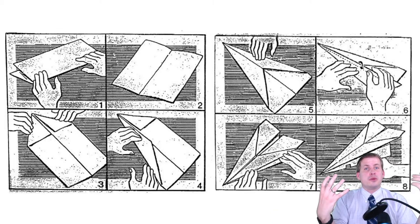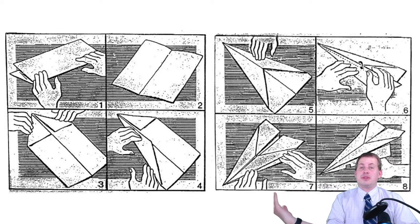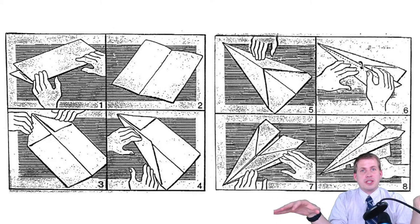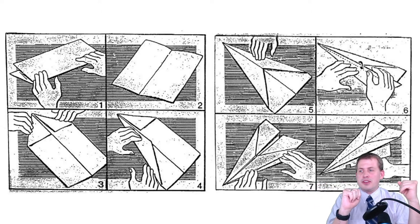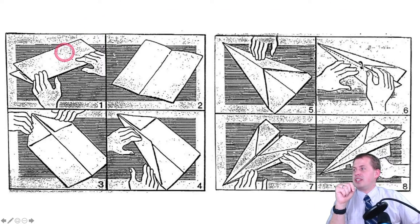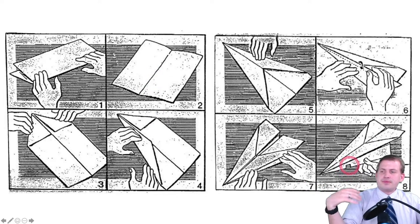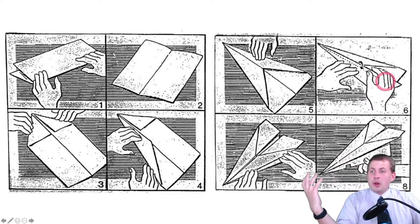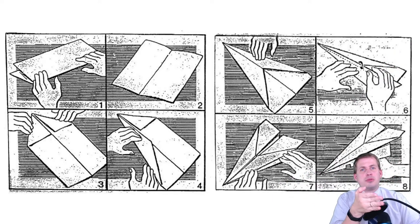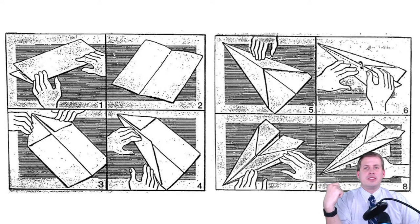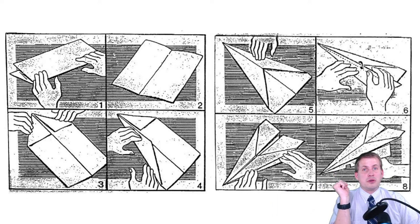Some groups have only two people, some have eight or ten. Each group competes to fold as many paper airplanes as possible, meeting specific specifications — folded in a certain manner with a notch cut at the bottom. In the first round, regardless of group size, you have three minutes but only one person can work. If you have ten people, nine sit and watch.